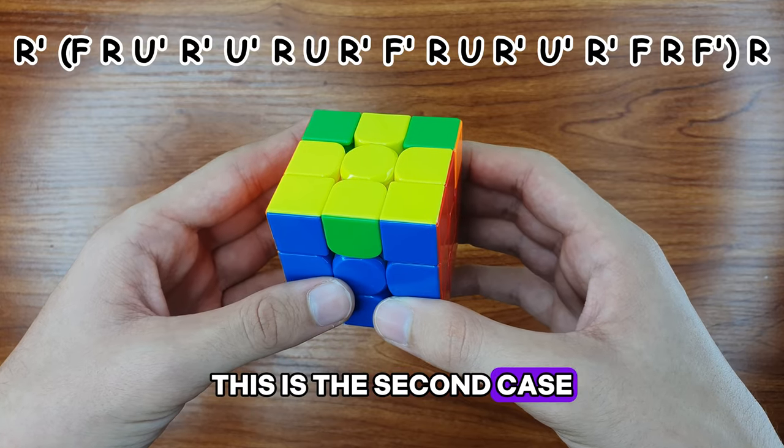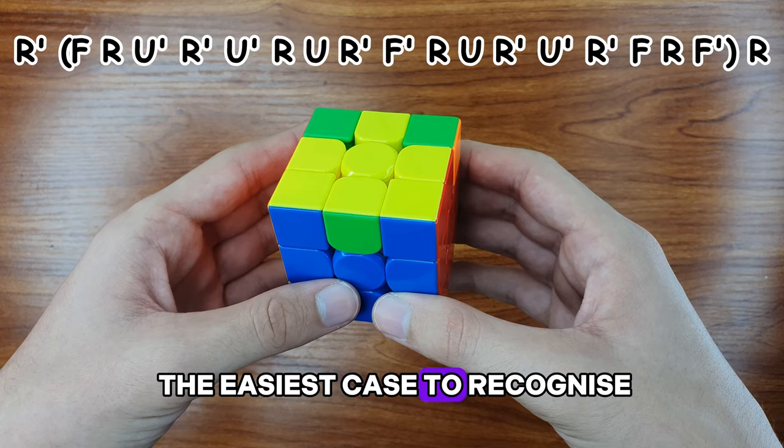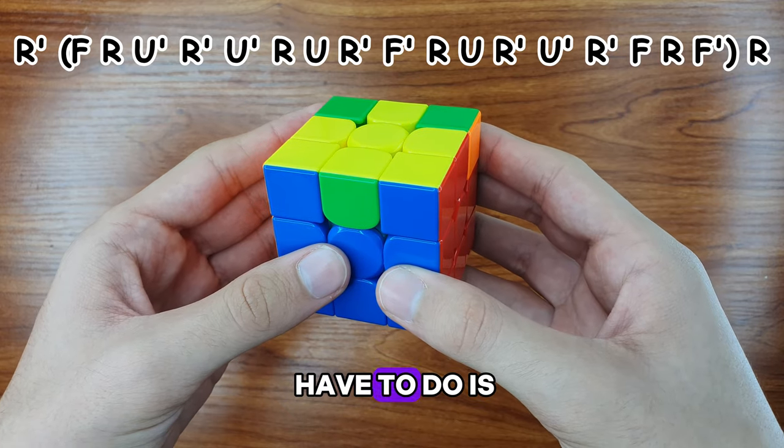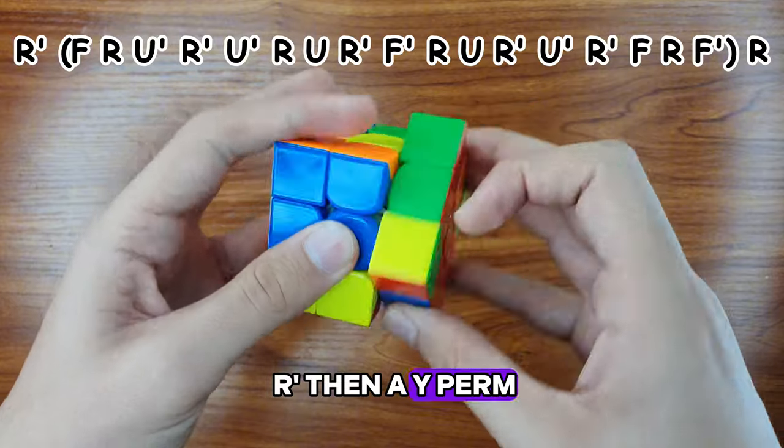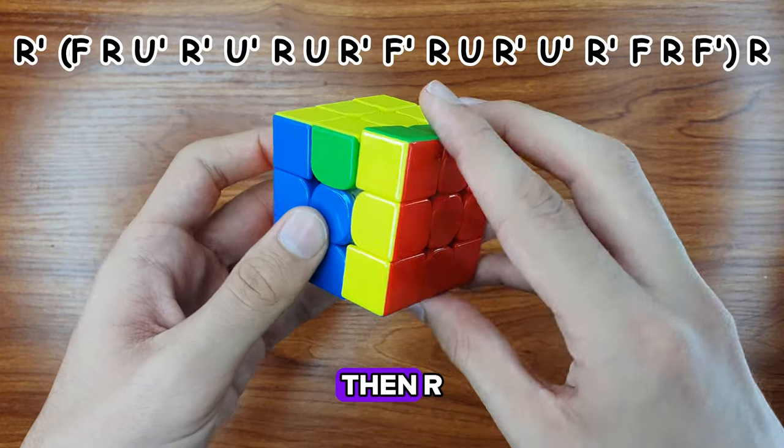This is the second case, which I think is the easiest case to recognize and execute. All you have to do is R', then Y perm, then R.